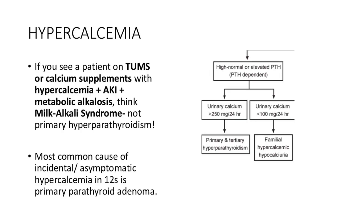Then we check urinary calcium excretion. If urinary calcium excretion is greater than 250 mg per 24 hours, this means excess calcium due to very high PTH in primary or tertiary hyperparathyroidism, which is being excreted by the kidneys. However, if urinary calcium excretion is below 100 mg per 24 hours, this could be familial hypocalciuric hypercalcemia, in which the kidneys have resistance to PTH and retain calcium.